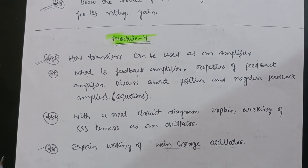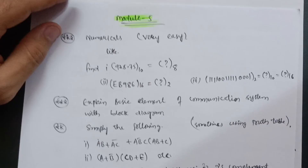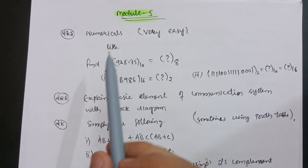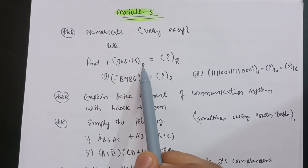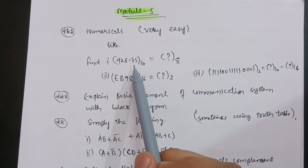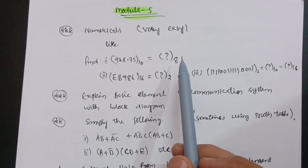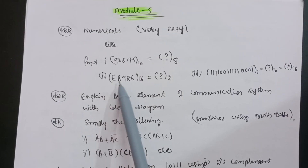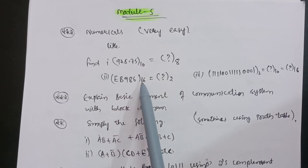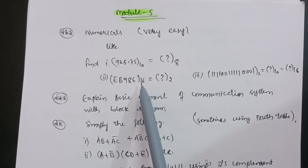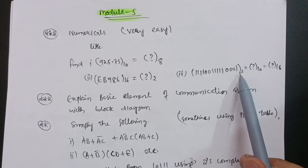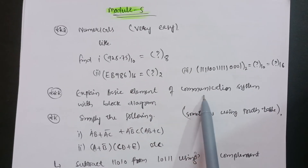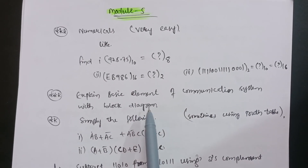In Module 5, the numericals are easy. Cover base conversion problems — for example, convert 95.75 base 10 to base 8, or convert EB986 base 16 to base 2, or convert 111 base 2 to base 10 or base 16. Also, for the theory question, explain the basic elements of a communication system with a block diagram and neat sketch.